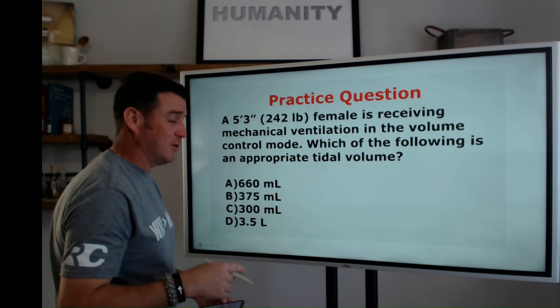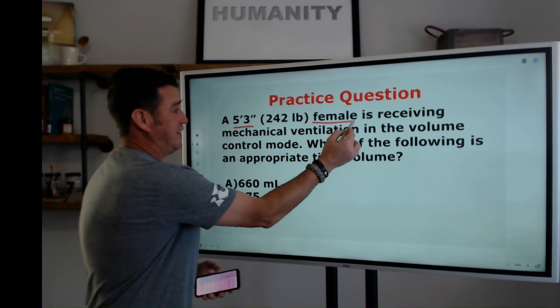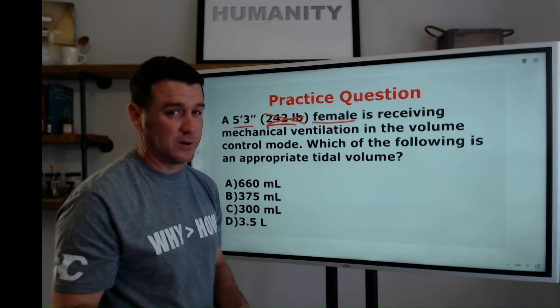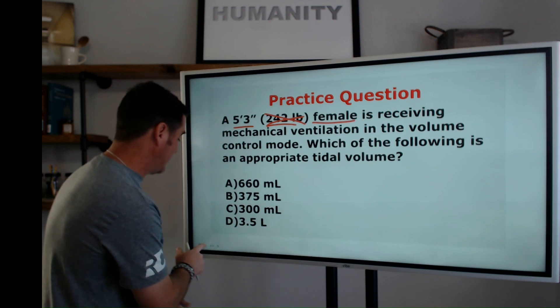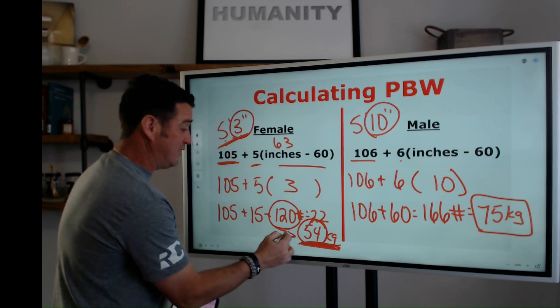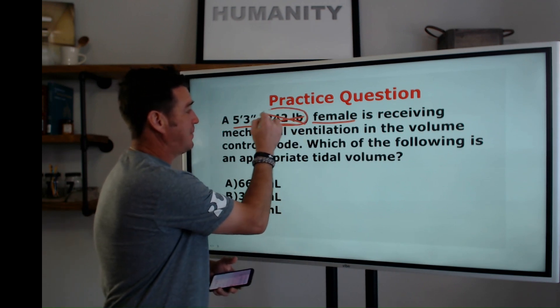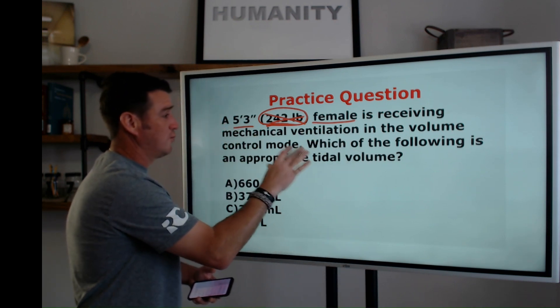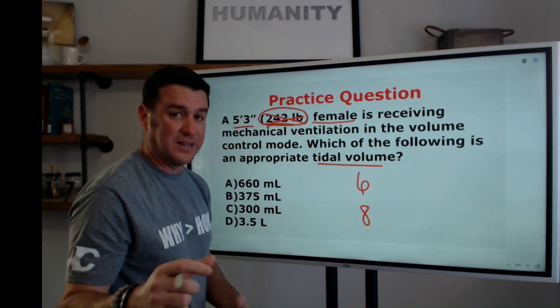Now, let's go back and look at the question here. Now that we've looked at it and we understand the formula now. 5'3" female. She's 242 pounds. This is a distractor. We know that now because we know that this person's ideal body weight is not 242 pounds. We know that this person's ideal body weight, 5'3" female, is 120 pounds, 54 kilograms. Now, all we really care about are the kilograms, but you have to recognize when you get this in pounds that that's not correct. She's receiving mechanical ventilation, volume control mode, which of the following is appropriate tidal volume? Now, tidal volume is 6 to 8 mLs per kilogram.